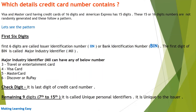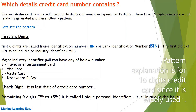Now let's see which details a credit card number contains. Visa and Mastercard have credit cards of 16 digits, and American Express has 15 digits. These 15 or 16 digit numbers are not randomly generated — they follow a particular pattern. Let's see what that pattern is.